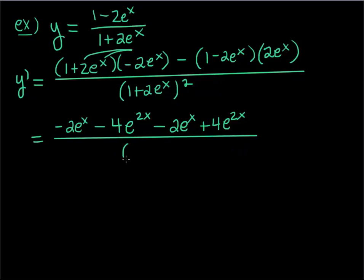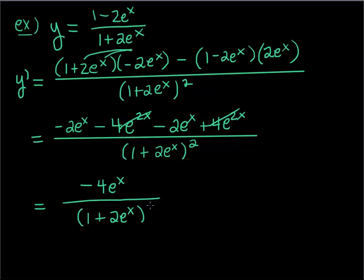On the bottom I'm just going to leave that as (1 + 2e^x)^2. This one actually turns out pretty nice because these guys cancel and look at what our final answer is: -4e^x / (1 + 2e^x)^2.